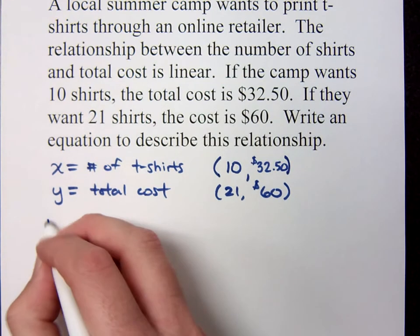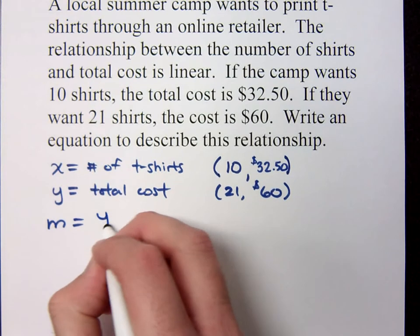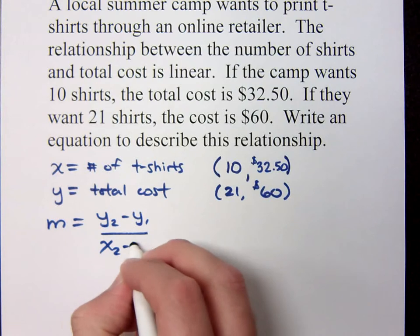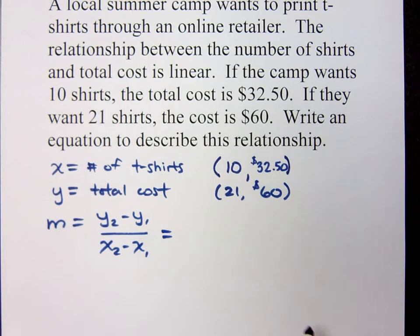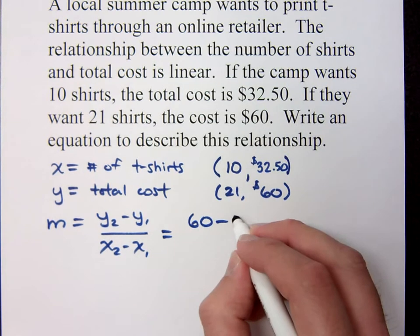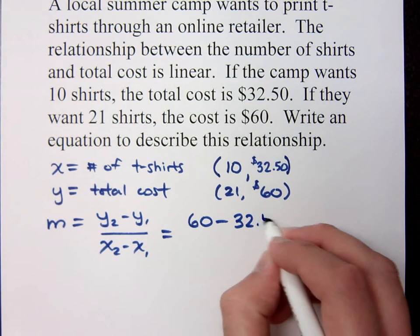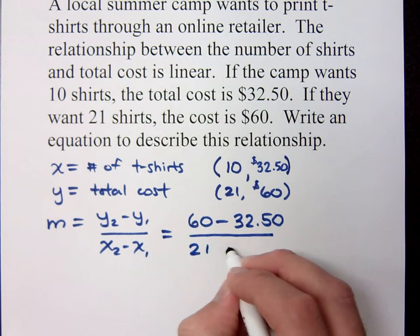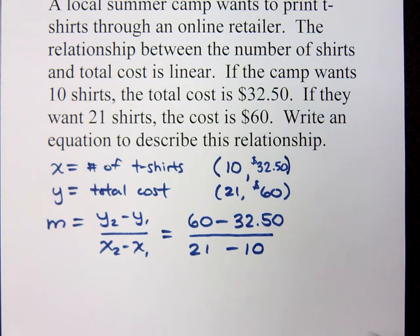Using the formula for slope — the change in y over the change in x — in this case: $60 minus $32.50 over $21 minus $10. We kind of expect this to be a positive slope, right? The more shirts you order, the more expensive.